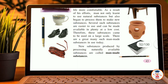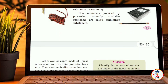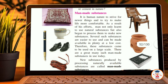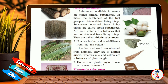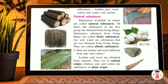New substances produced by processing naturally available substances are called man-made substances. Examples of man-made substances include: pillows, china cups, pens, shoes, lace, pencils, and books. Examples of natural substances include: jute, rock, cotton, and leather.